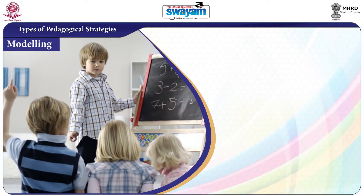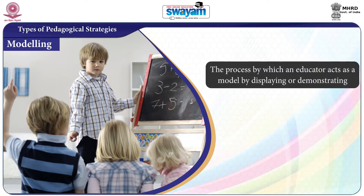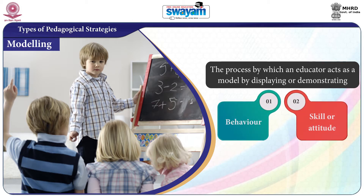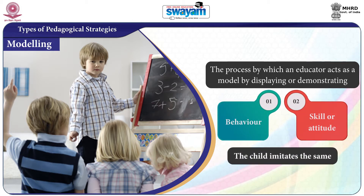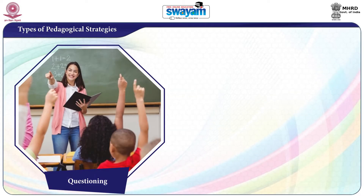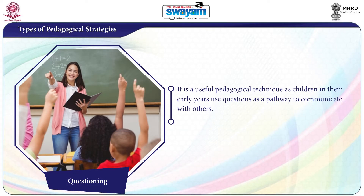Strategy 5 is Modeling — a process by which an educator acts as a model by displaying or demonstrating a behavior, skill, or attitude so that the child imitates the scene. Strategy 6 is Questioning — a very useful pedagogical technique, as children in their early years use questions as a pathway to communicate with others.